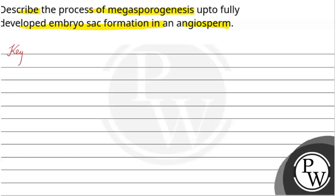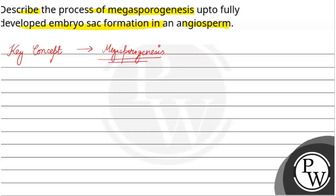The key concept to answer this question is Megasporogenesis. Now let's see what is Megasporogenesis? It is basically the process of formation of female gametophyte, which is formed from a functional Megaspore. It's the formation of female gametophyte in the ovule.